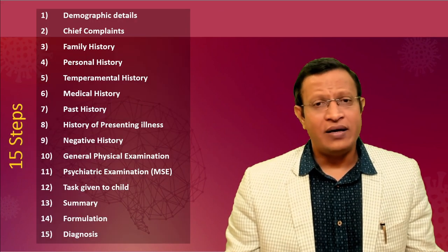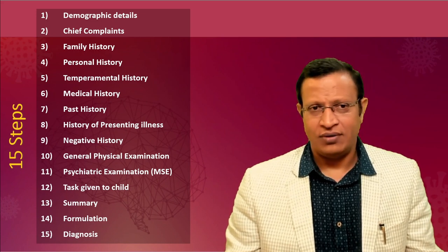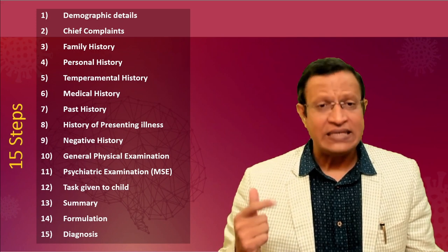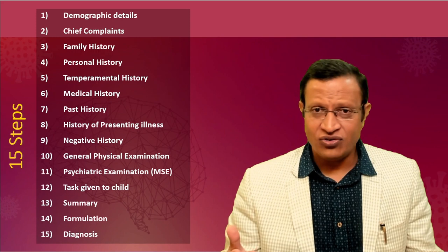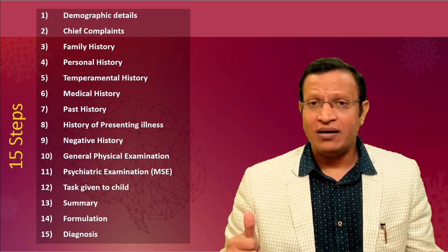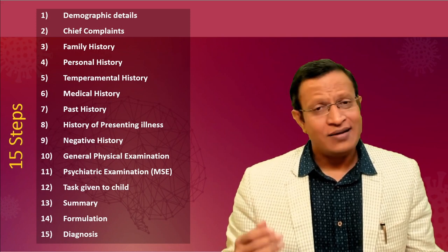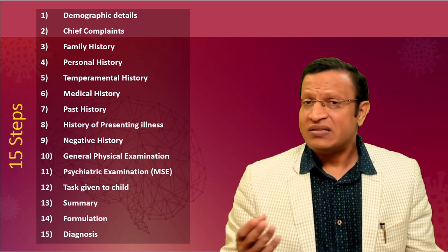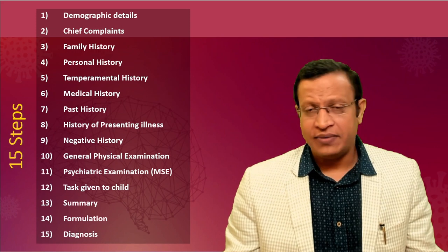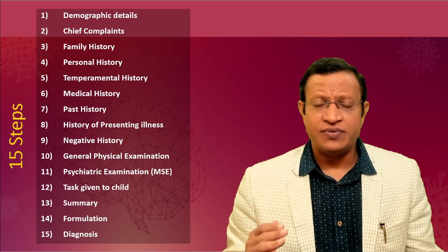There are 15 steps for detailed evaluation: demographic details, chief complaints, family history, personal history, temperamental history, medical history, past history, history of presenting illness, negative history, general physical examination, psychiatric or mental status examination, tasks given to the child, summary, formulation, and diagnosis.